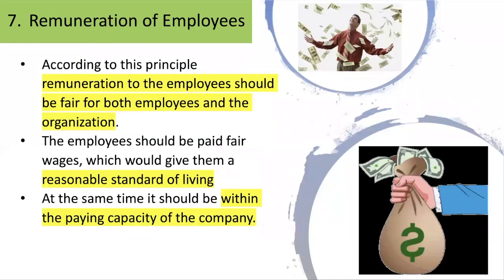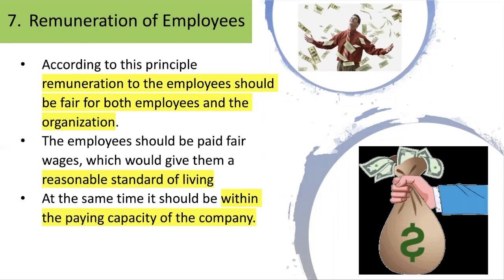The seventh principle is Remuneration of Employees. According to this principle, remuneration to employees should be fair from both the employees' and the organization's point of view. From the employees' point of view, they should be paid fair wages that give them a reasonable standard of living. From the organization's point of view, at the same time, it should be within the paying capacity of the company. So this principle requires looking at both perspectives: what employees need and what the company can afford.